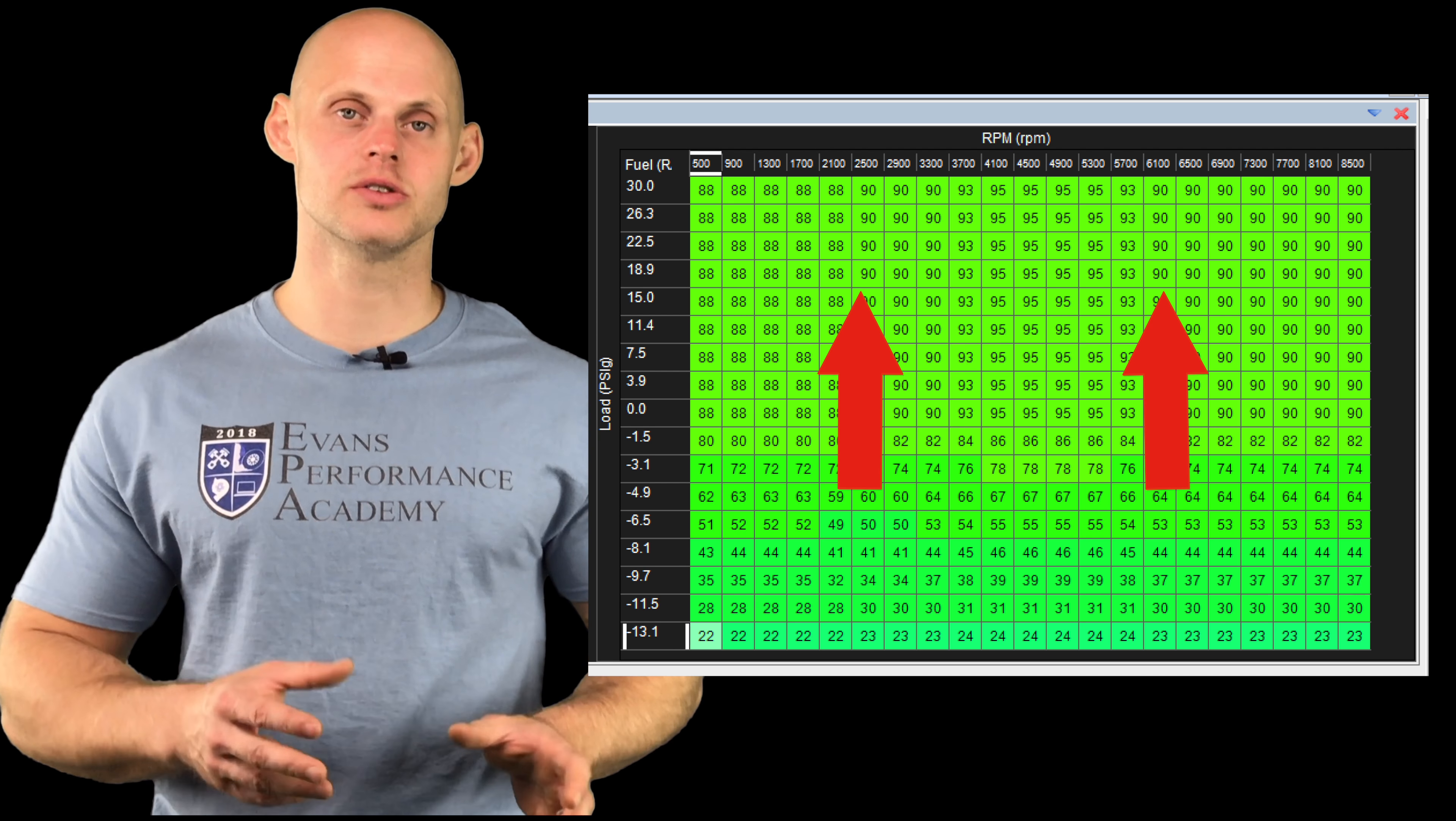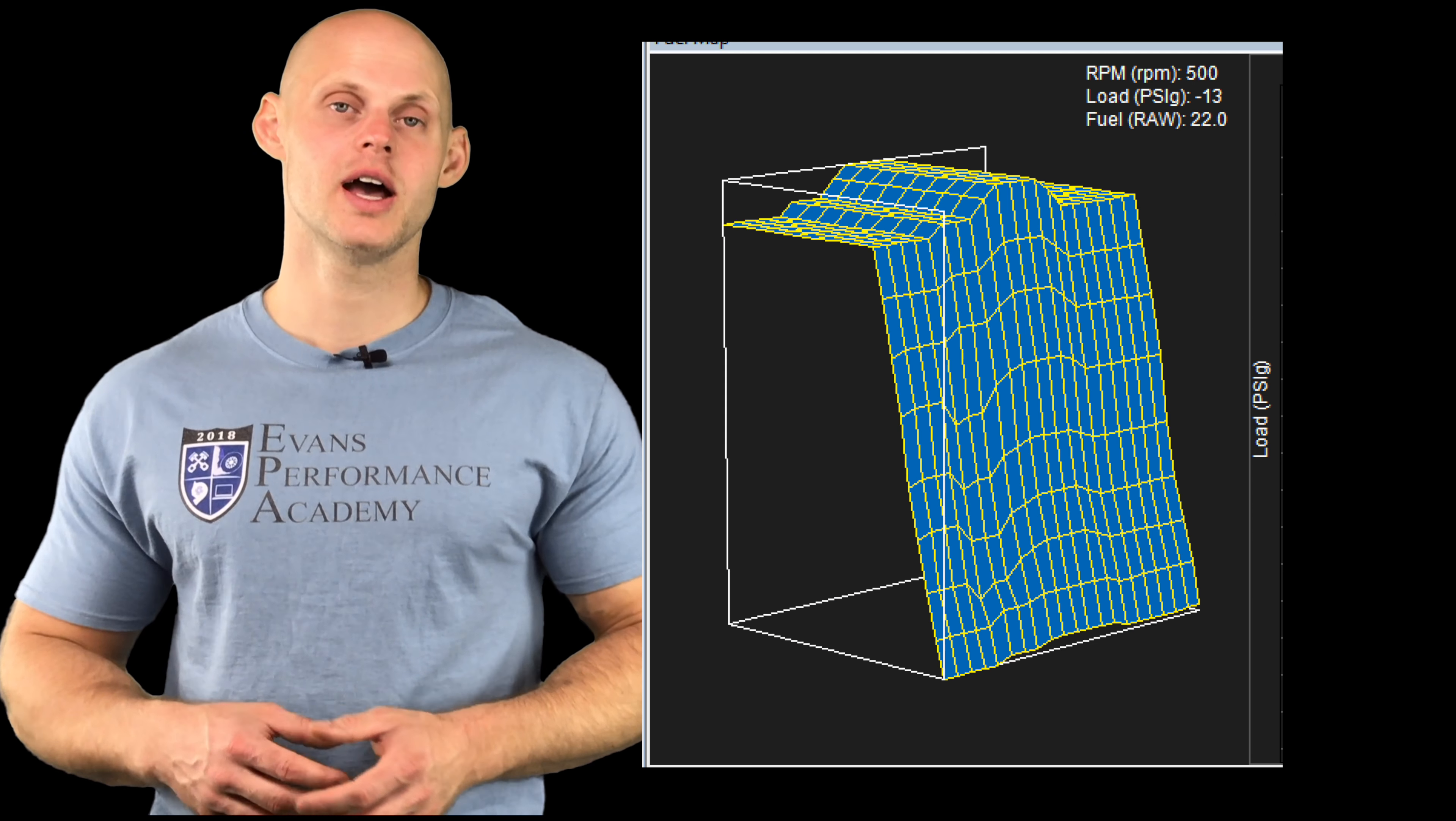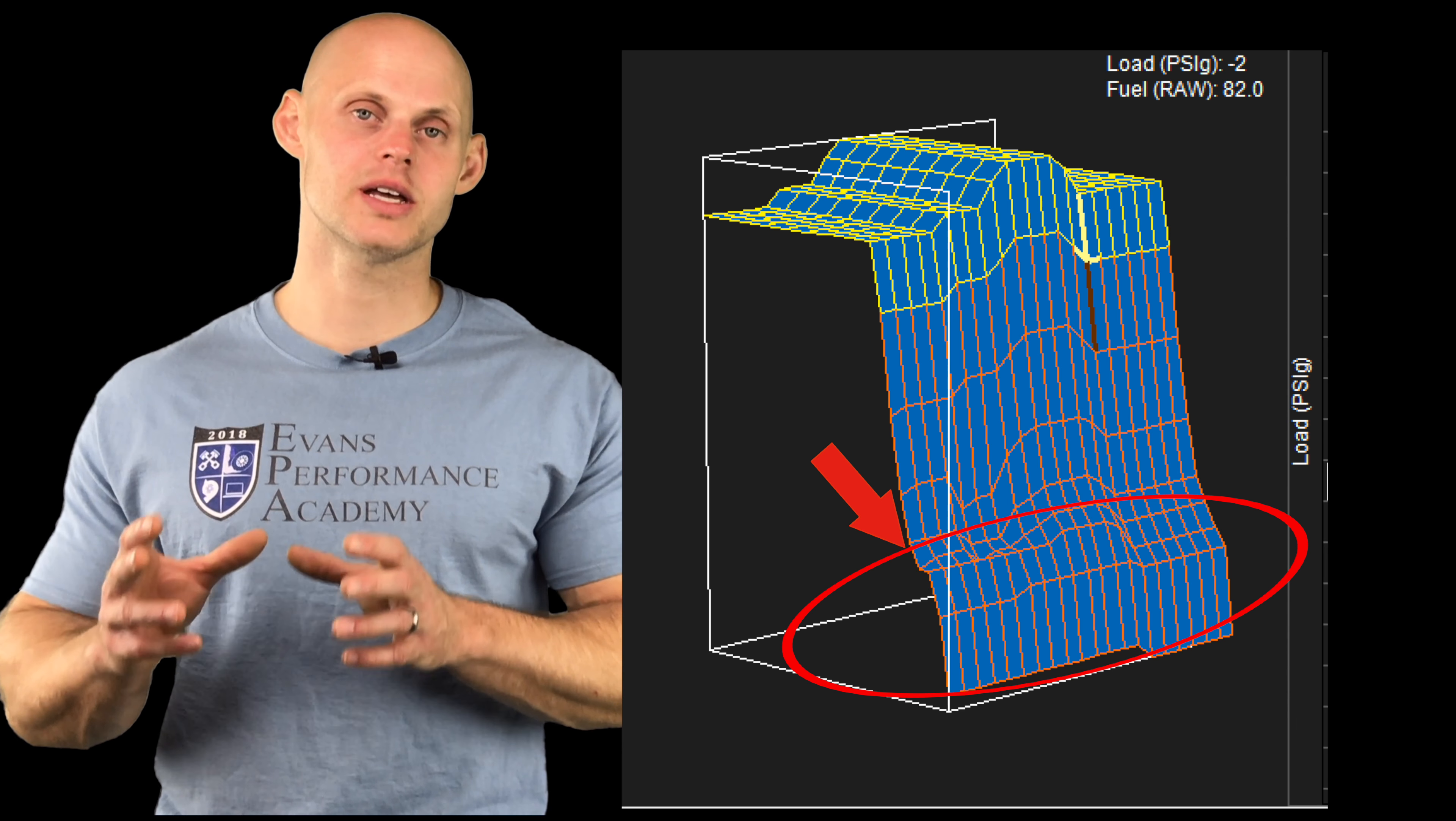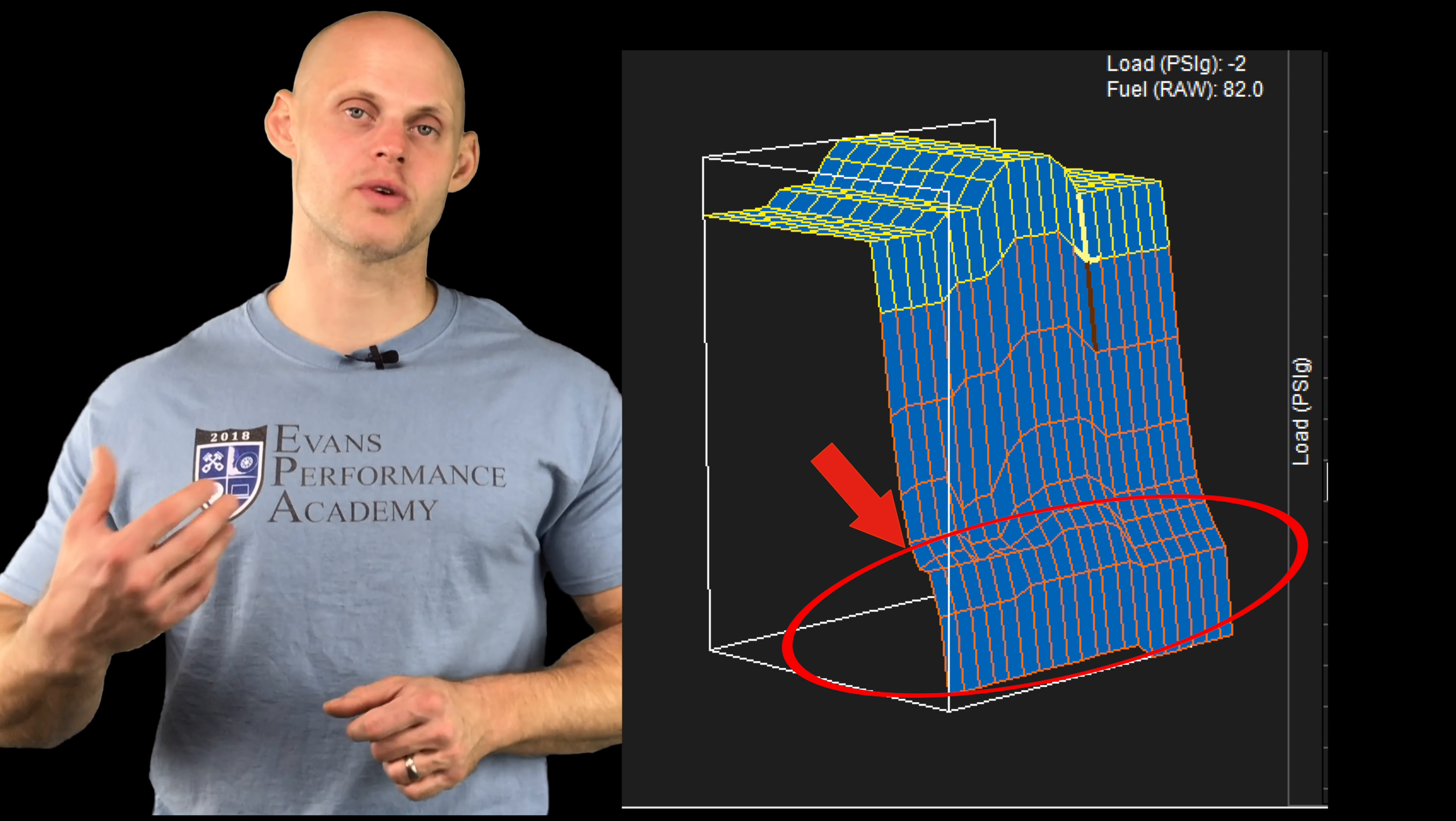Now in an AEM Series 1, Series 2, if we program the wrong injector data, what we're going to be finding if we look at a three-dimensional look of our table is that the values at idle are going to have a big hump at idle and the light throttle driving.